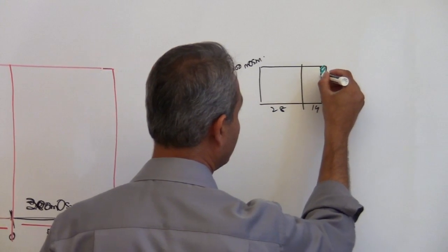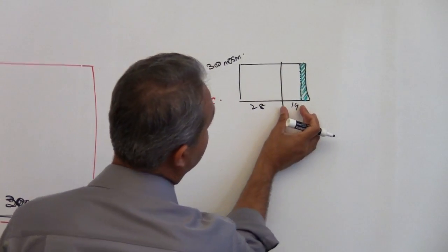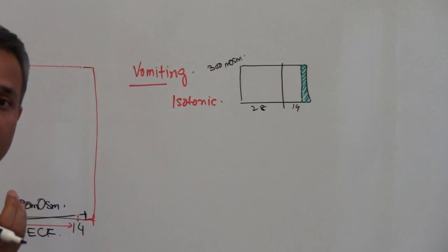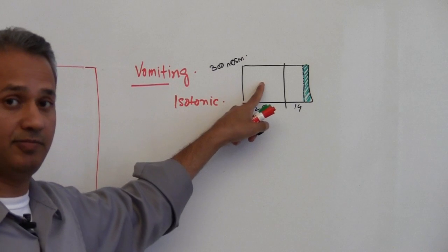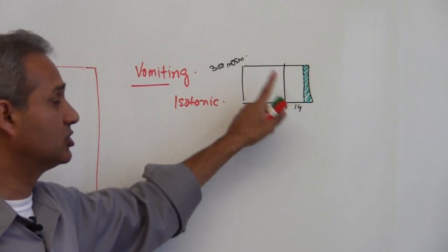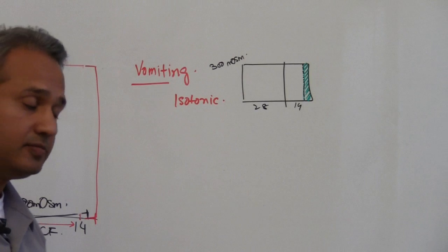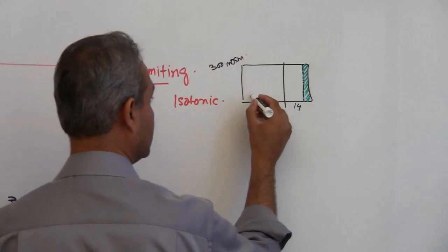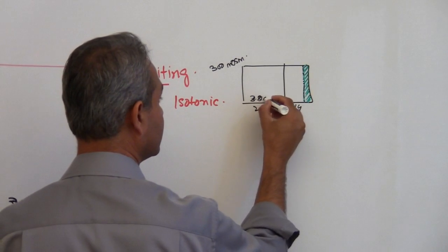So the end result was that if I make this dotted line over here, extracellular fluid compartment volume shrunk. Intracellular fluid compartment did not change at all because there is no change in the concentration. Osmolarity stayed the same: 28, 300, 300.